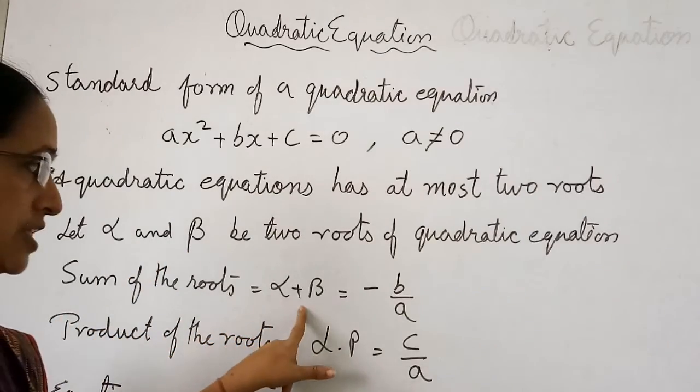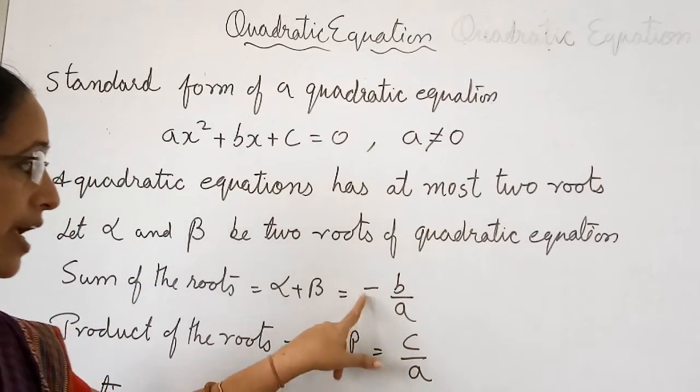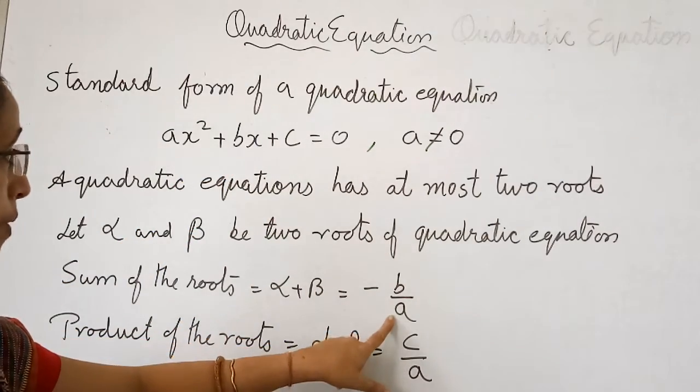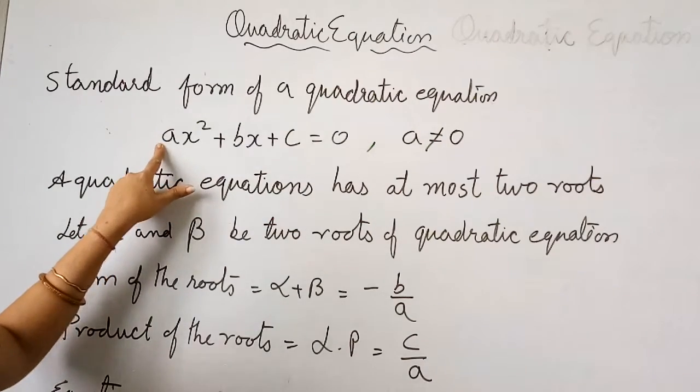The sum of the roots is α + β = -b/a. We get the minus sign in the formula, upon a.